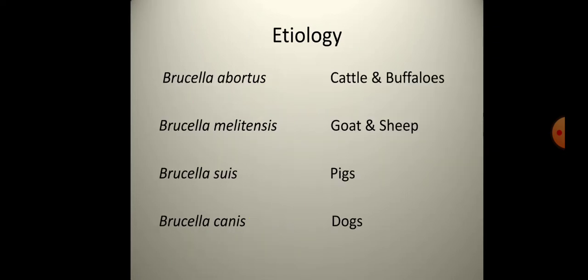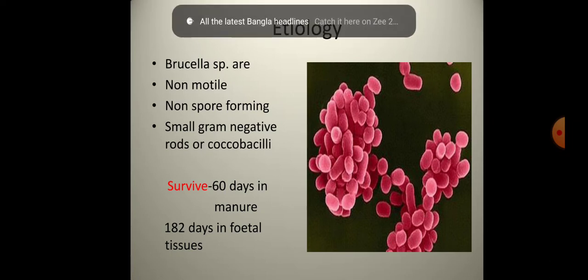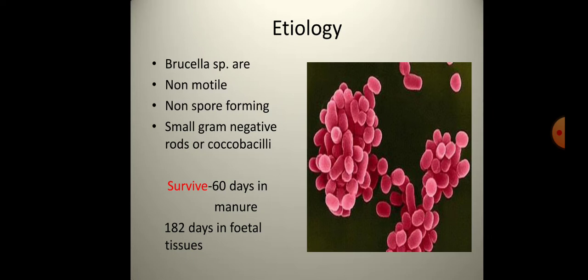Regarding etiology: Brucella abortus causes disease in cattle and buffaloes; Brucella melitensis causes disease in goats and sheep; Brucella suis causes disease in pigs; and Brucella canis causes disease in dogs. Brucella species are non-motile and non-spore forming, small gram-negative rods or coccobacilli. They survive 60 days in manure and up to 182 days in fetal tissue.